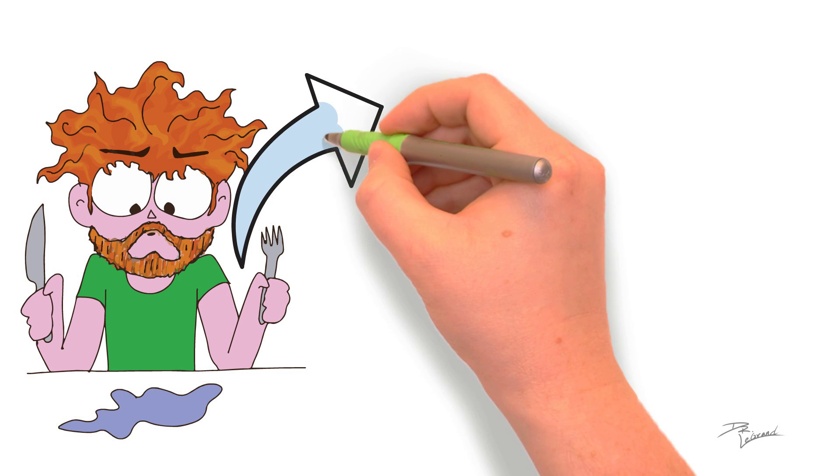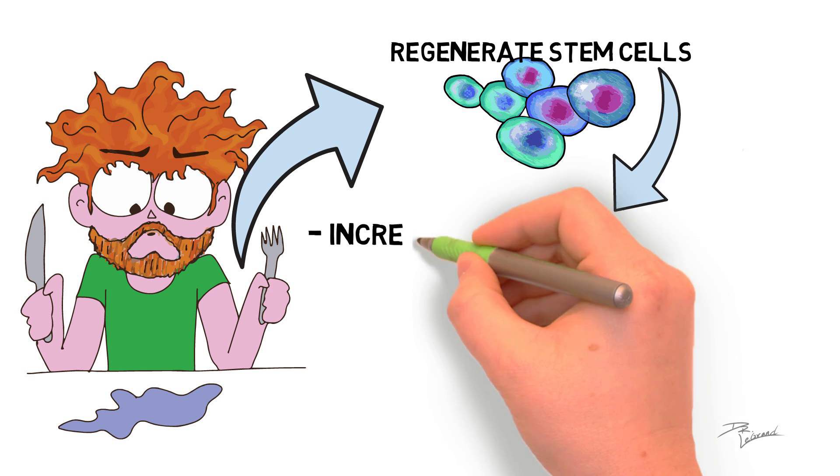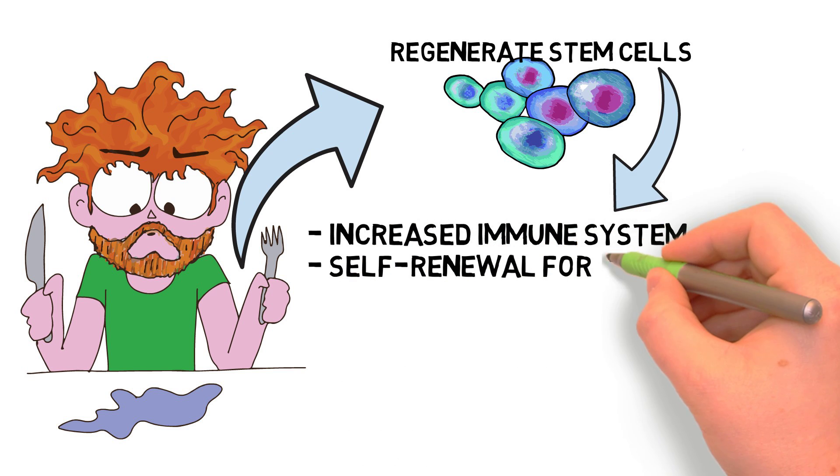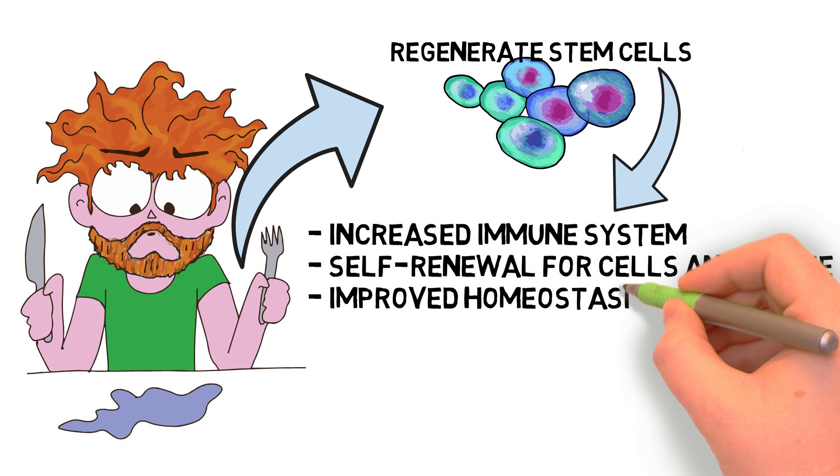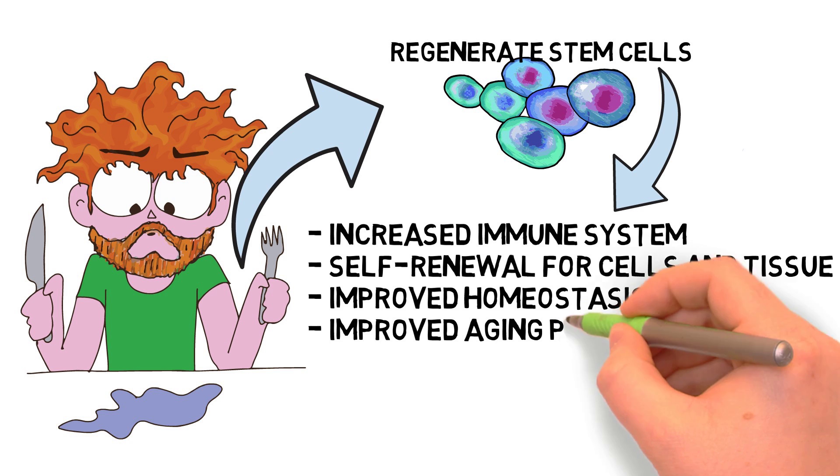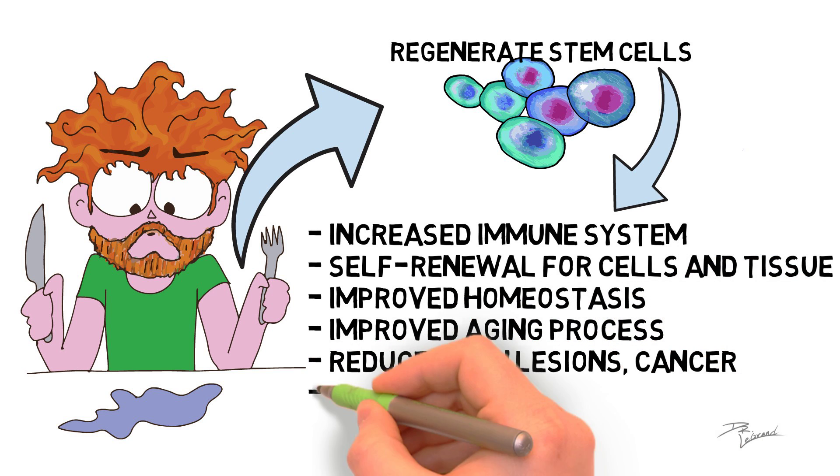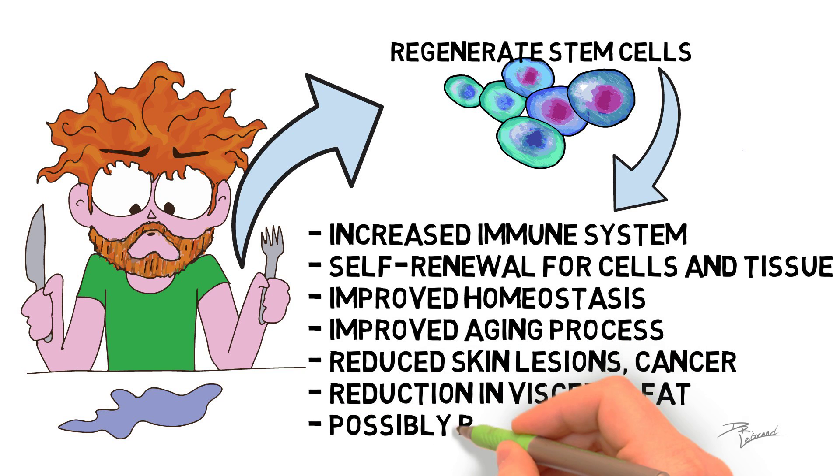To summarize, fasting can be a very effective way of regenerating stem cells, which in return can help benefit and increase our immune system, promote self-renewal for cells and tissue in the human body. It can also improve homeostasis, improve the aging process in our body, reduce incidences of skin lesions and cancer, reduction in visceral fat, and possibly reverse the effects of diabetes.